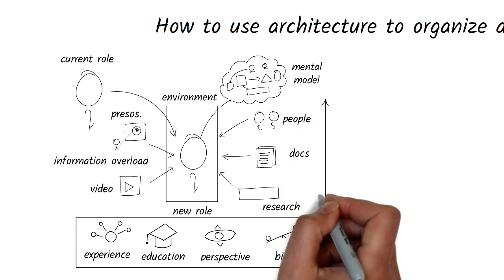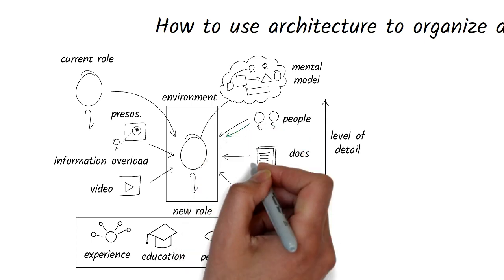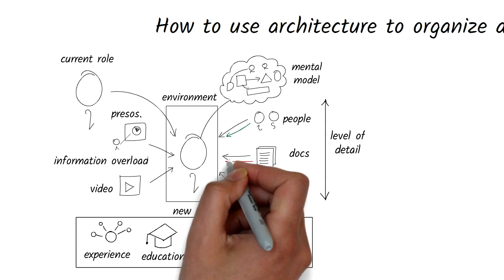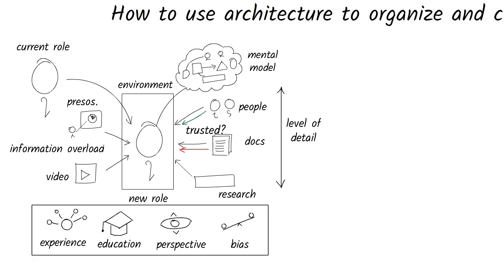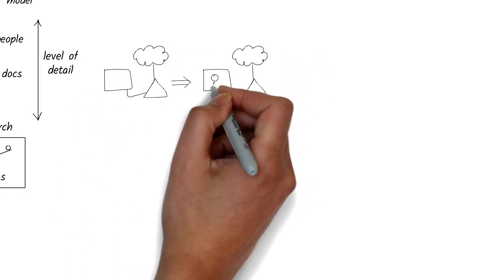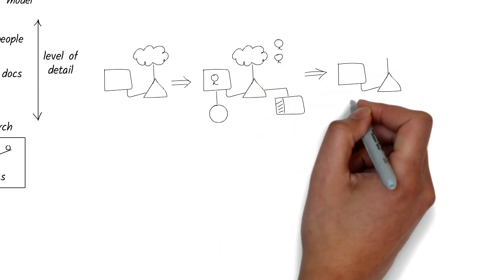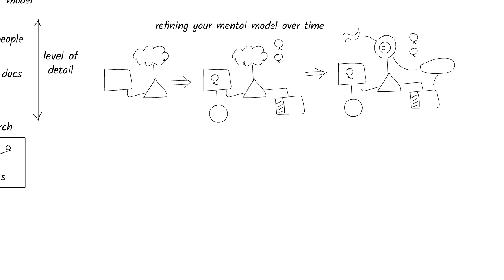A lot of detail in these sources can also vary — it could be from high level to granular. The trustworthiness of information is also something to consider. For example, a document may be outdated compared to what you hear from a colleague. Your goal is to organize all this information gradually as you build and refine your mental model. You should understand the big picture but also be able to dive into the details of specific areas when you need to.